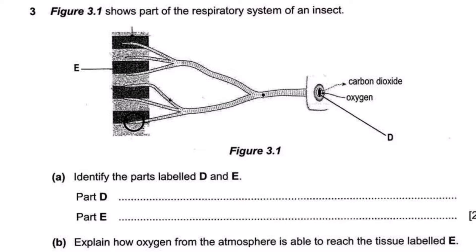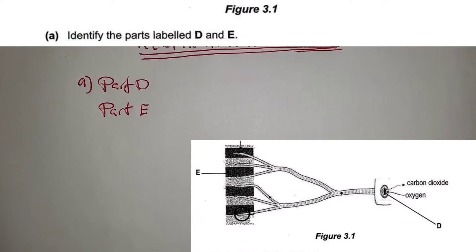Let's look at respiration in insects by answering this question. Figure 3.1 shows part of the respiratory system of an insect. The diagram shows structure E with carbon dioxide out and oxygen in, and part D. The first question, question A, asks to identify the parts labeled D and E.